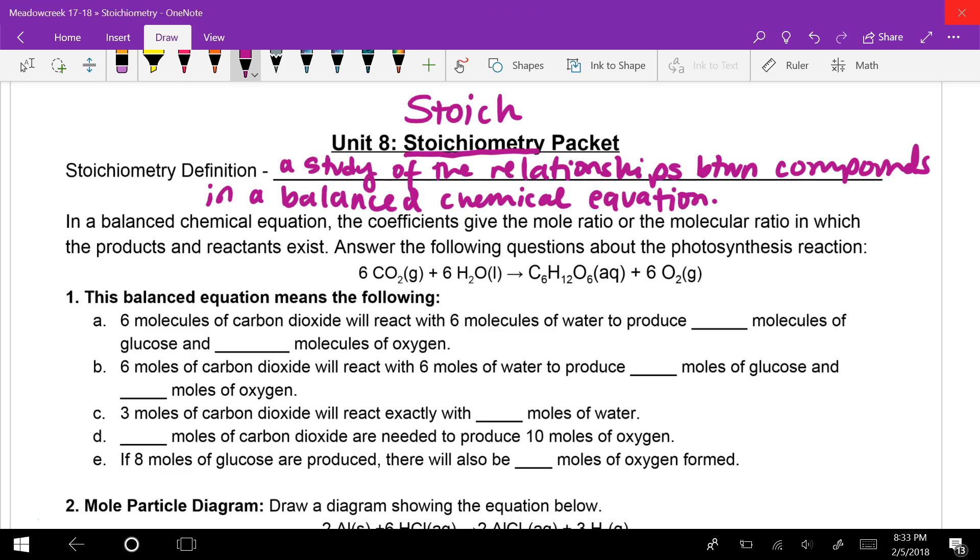Now, in a balanced chemical equation, the coefficients give the mole ratio or the molecular ratio in which the products and reactants exist. And so then we have these questions about this photosynthesis reaction. Just as a reminder, your reactants are on the left side of the arrow and your products are on the right.